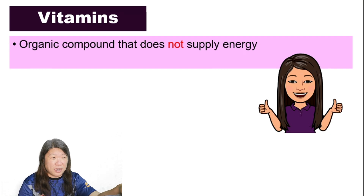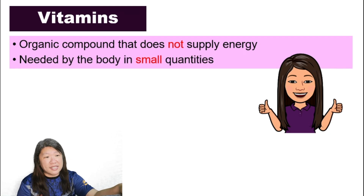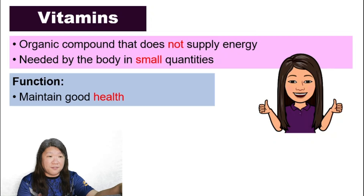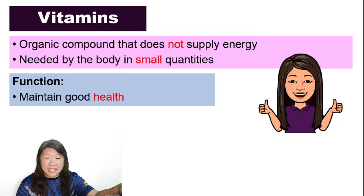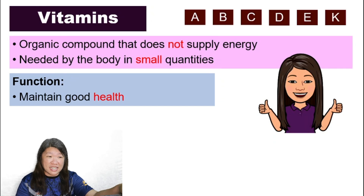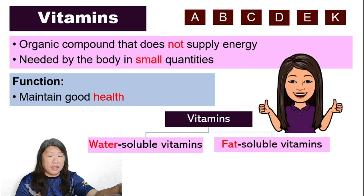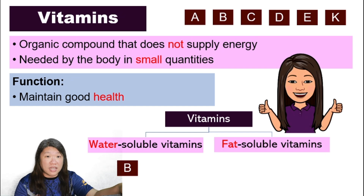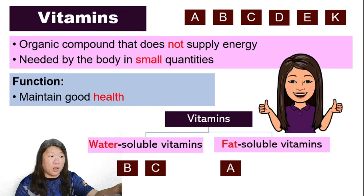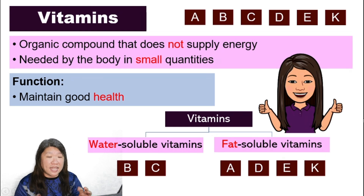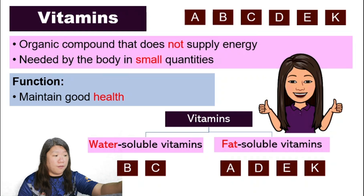Vitamins are organic compounds that do not supply energy. They are needed by the body in very small quantities, and their function is to maintain good health. We have six different types of vitamins: A, B, C, D, E, and K. They can be divided into two types — water-soluble and fat-soluble. Vitamins B and C are water-soluble, while vitamins A, D, E, and K are fat-soluble.